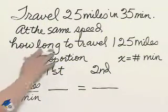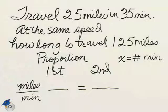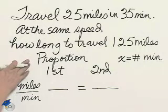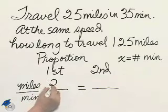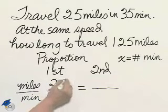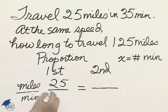The phrase 'how long' is measured in minutes, so x will be the number of minutes. We can do this with a proportion. In the first case, I traveled 25 miles in 35 minutes.